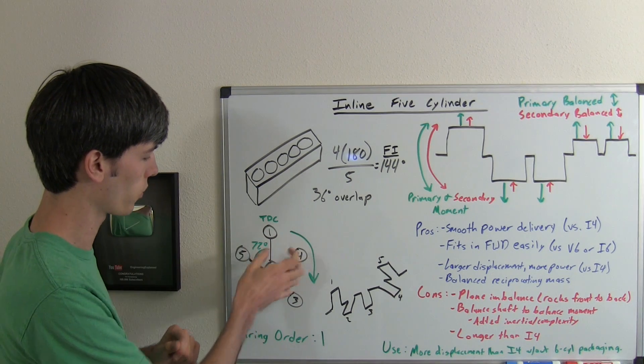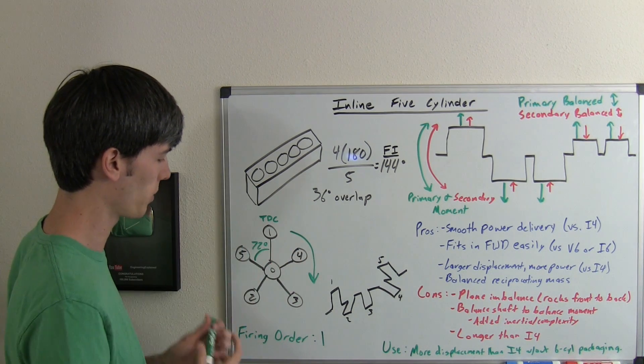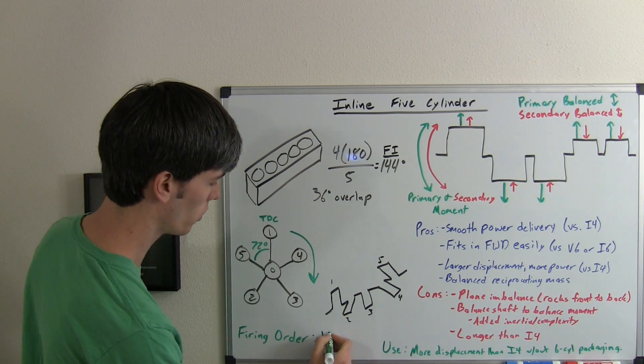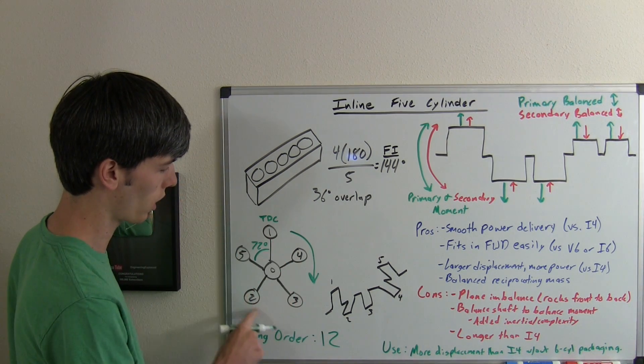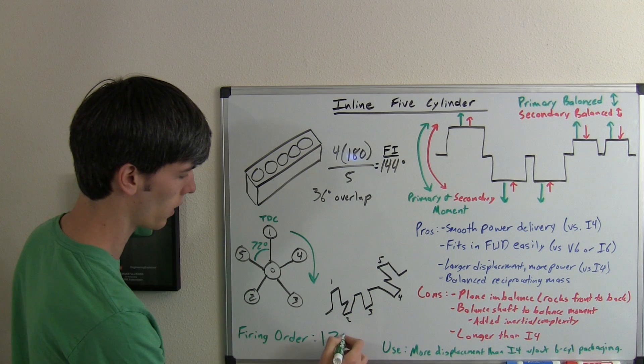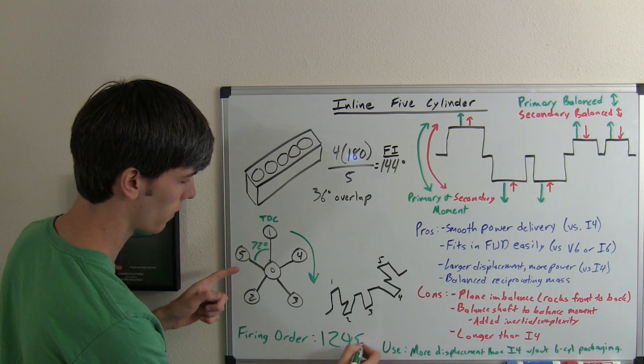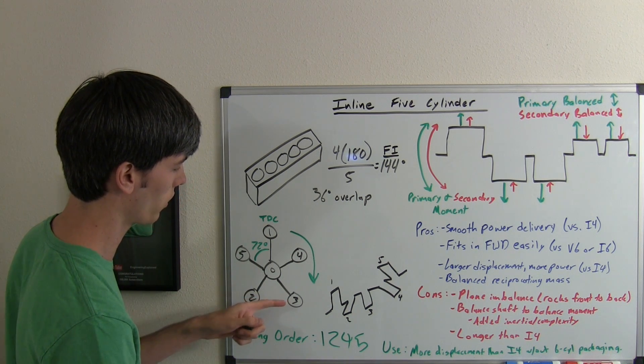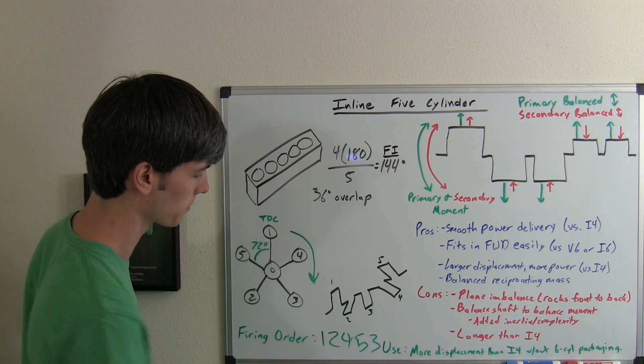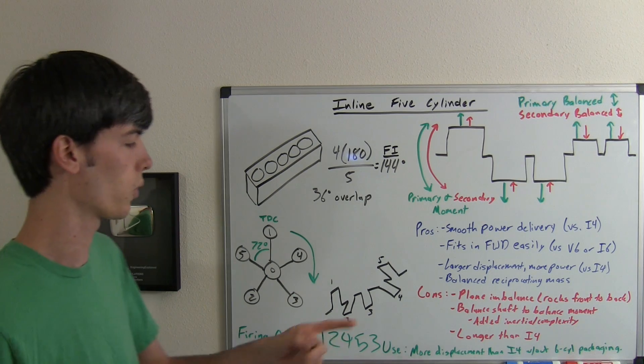If we rotate this 144 degrees, number two is going to be at the top, so we know our firing interval is going to go one, two. Rotate that another 144 degrees, that's going to go to four. Rotate that another 144, you'll be at five, and then rotate that another 144 degrees, and you'll be at three. So the firing order is one, two, four, five, three.